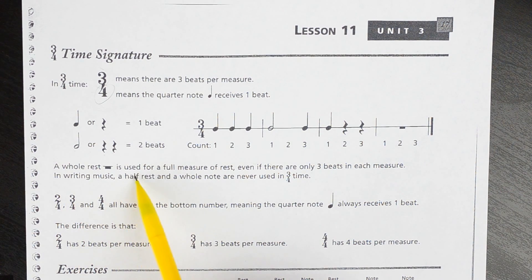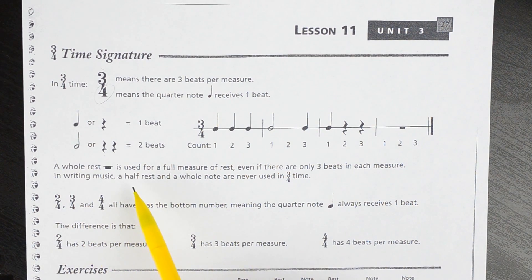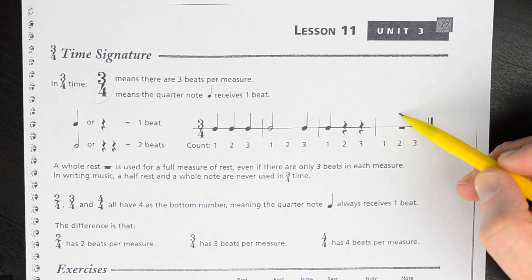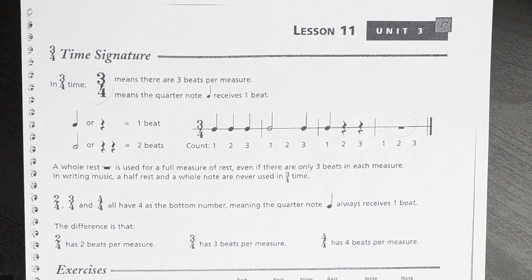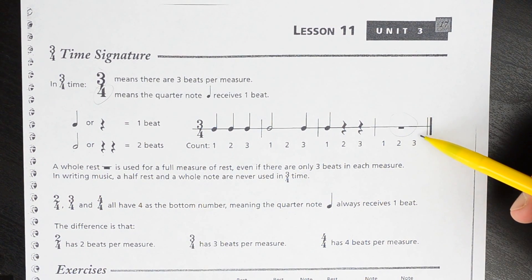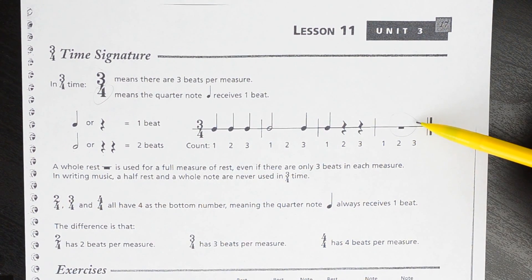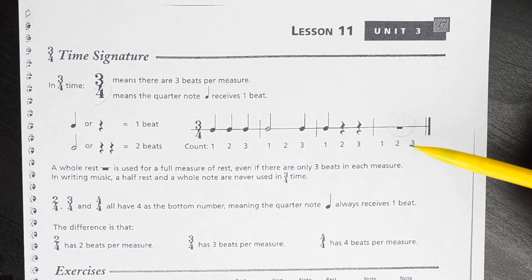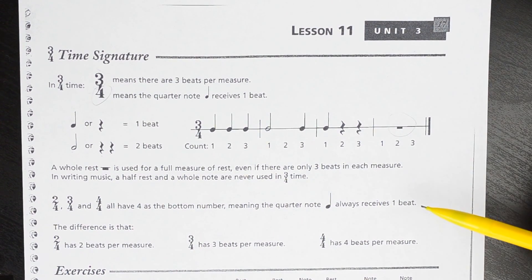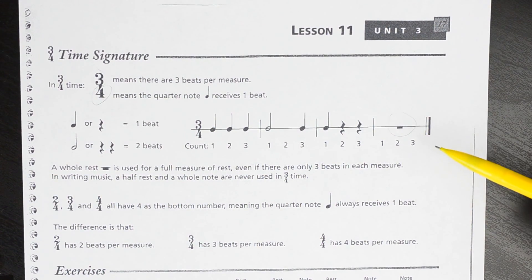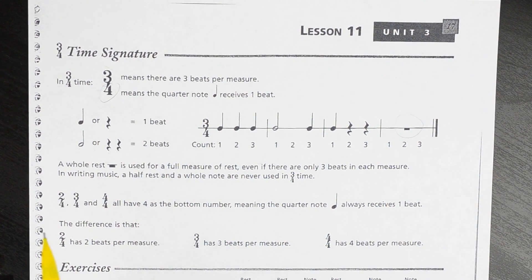A whole rest is used for a full measure of rest, even if there are only three beats in each measure. In writing music, a half rest and a whole note are never used in 3/4 time. The whole rest is the only musical symbol that changes value depending on the time signature — in 3/4 it's worth three beats, in 4/4 it's worth four beats, and in 2/4 it's worth two beats. Every other musical notation value is always fixed.